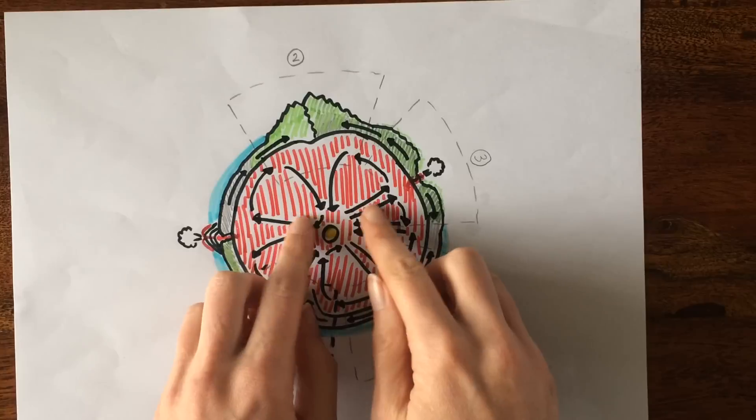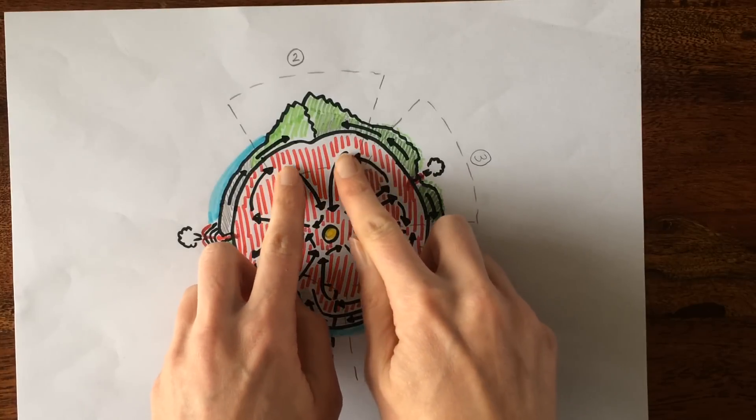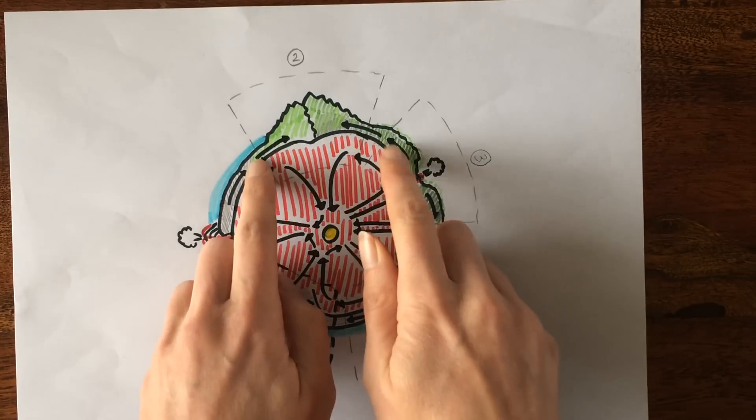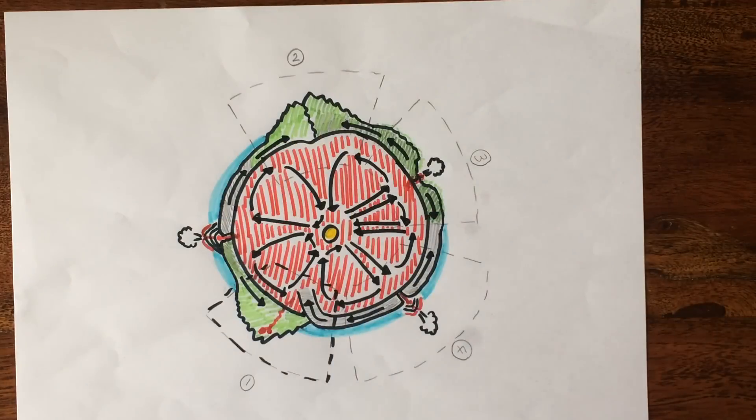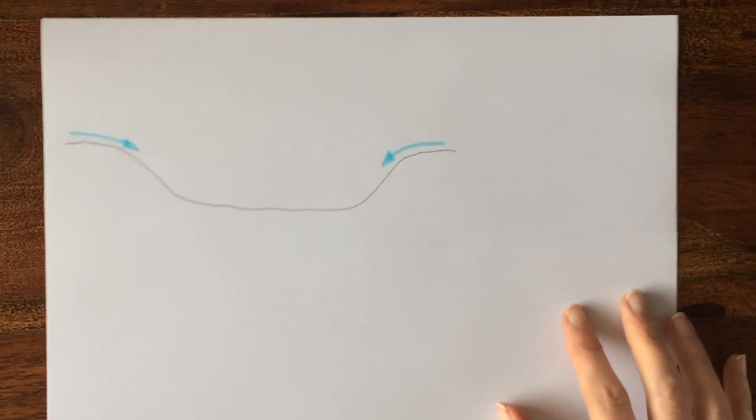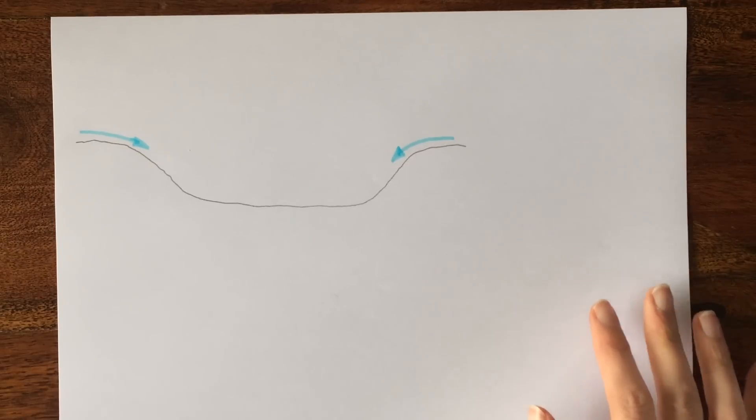In this example we've got convection currents as you can see here coming together, and that's dragging the plates together here. In order to tell you a little bit about this boundary, I'm going to start by talking about what creates rock.